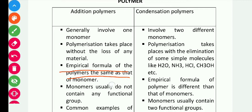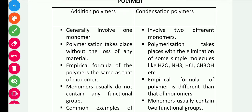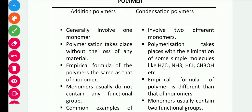Third, in addition polymerization, the empirical formula of the polymer is the same as that of the monomer — for example, ethene and polyethene share the same empirical formula. Whereas in condensation polymers, the empirical formula will be different because different monomers combine with elimination. Fourth, monomers in addition polymerization usually don't contain functional groups, like ethene, whereas condensation polymer monomers have two or three functional groups, such as adipic acid which contains -COOH groups.